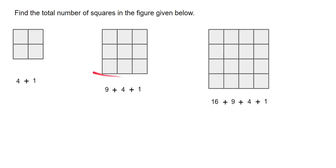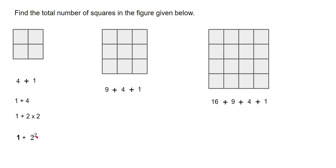We go back to the basic diagram. We already know there are four plus one squares. We are going to rewrite that — for ease of understanding, write it as one plus four. And this four is actually one times one plus two times two, which can also be written as one squared plus two squared, or two to the power of two.